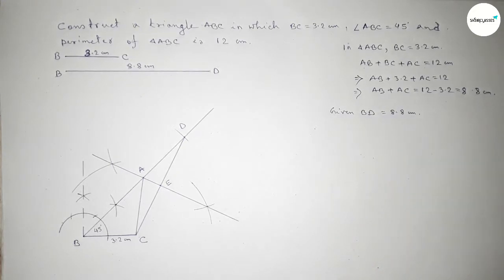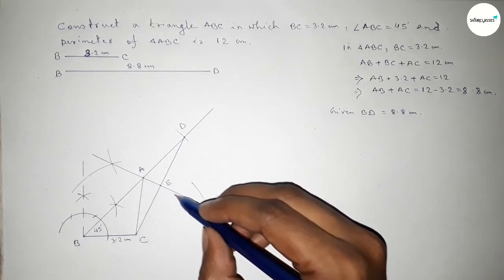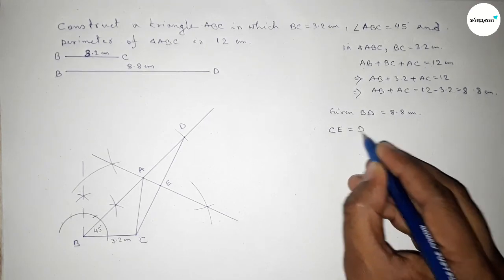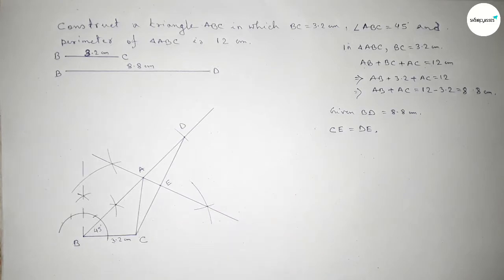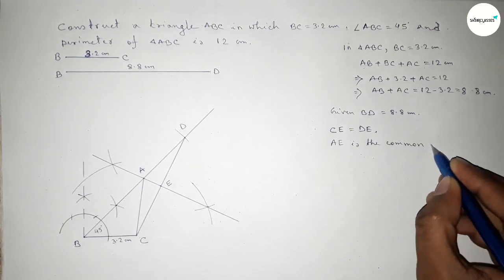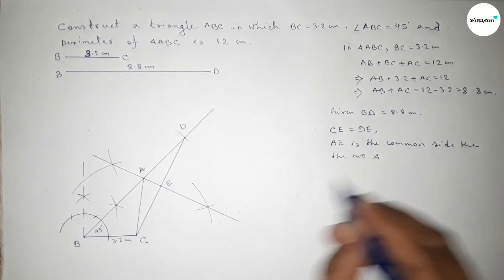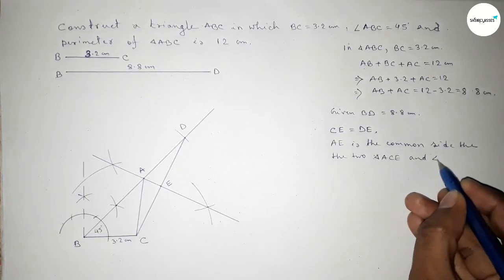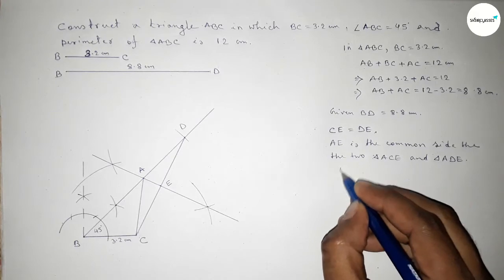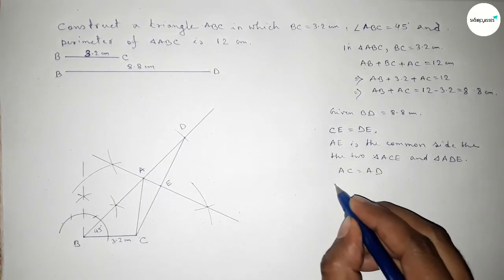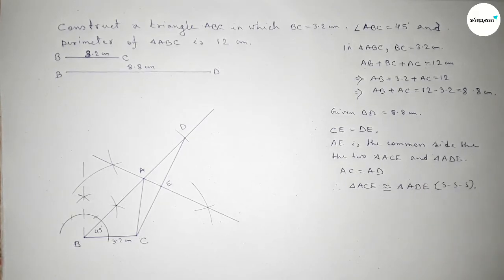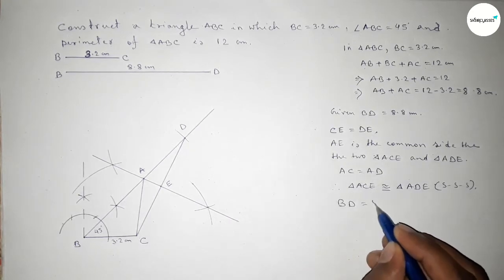Now discussing the verification: given BD equals 8.8 centimeters, and the perpendicular bisector AE bisects line CD into two equal parts, so CE equals DE. AE is the common side of triangles ACE and ADE. By the perpendicular bisector theorem, AC equals AD. Therefore triangles ACE and ADE are congruent by side-side-side.